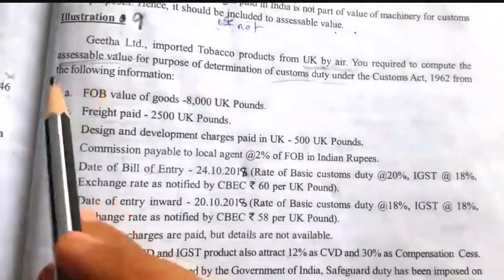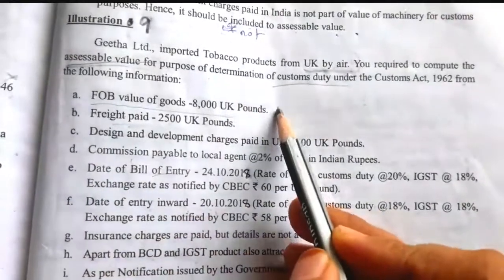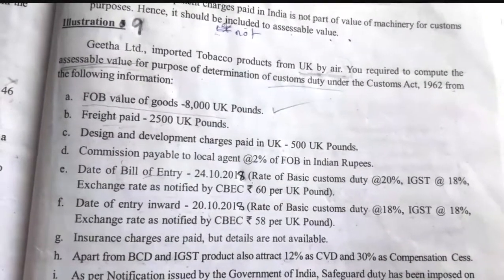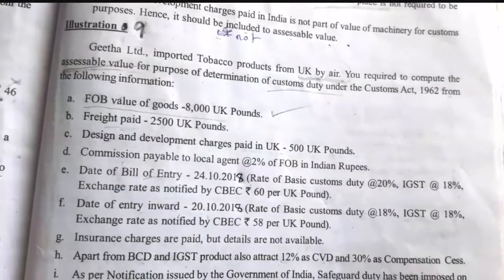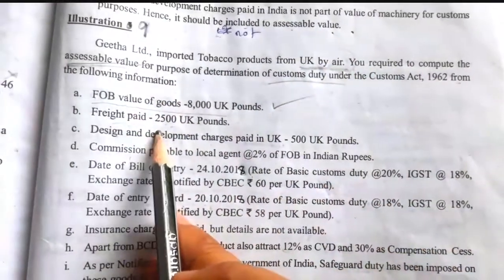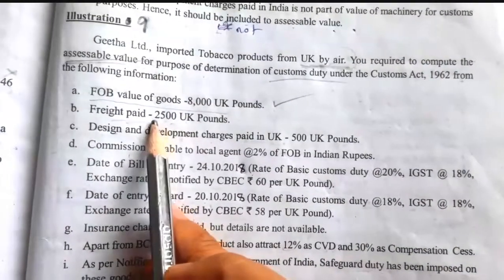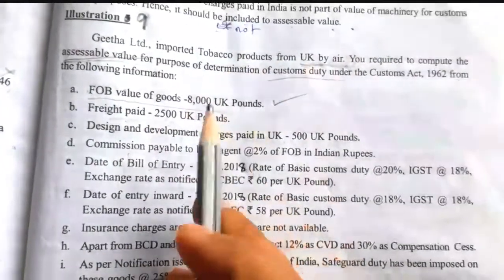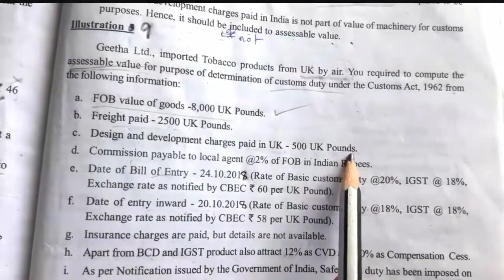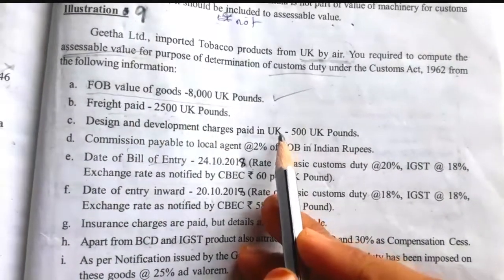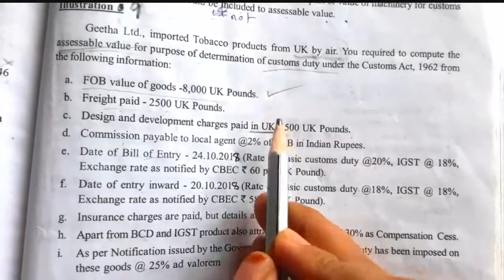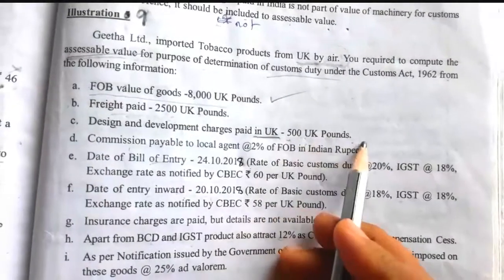In this illustration, FOB value is directly given. So we have to start with the FOB directly, not a cost of machinery. The FOB value of goods is 8,000 UK pounds. Freight paid is 2,500 UK pounds for import by air, so we have to compare 2,500 or 20% of FOB. Design and development charges paid in UK are 500 UK pounds — this is not included in the FOB, so we have to add it.